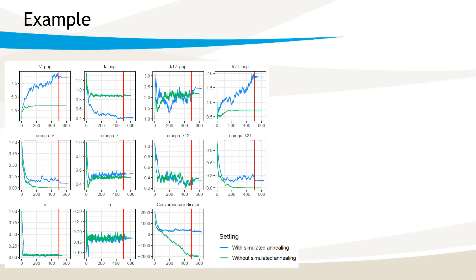Let me now show an example of what happens with and without simulated annealing. This plot shows the convergence of SAEM when estimating the parameters of the same two-compartment PK model over 500 iterations, starting with all the initial estimates at 1, with simulated annealing in blue and without simulated annealing in green. The switch to the smoothing phase is indicated in red.